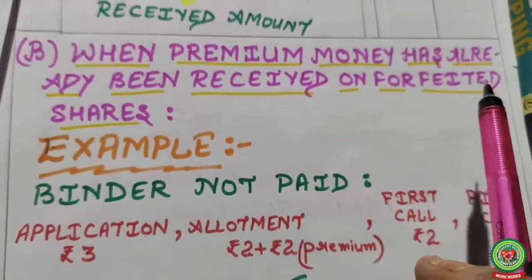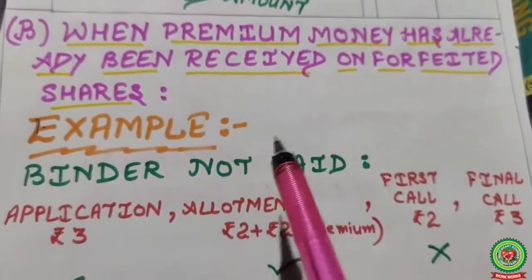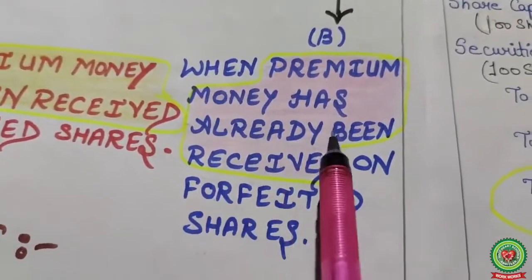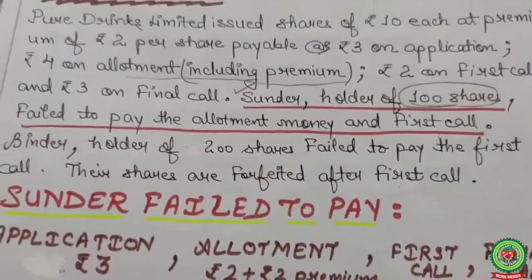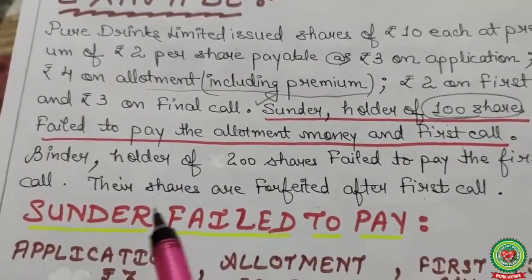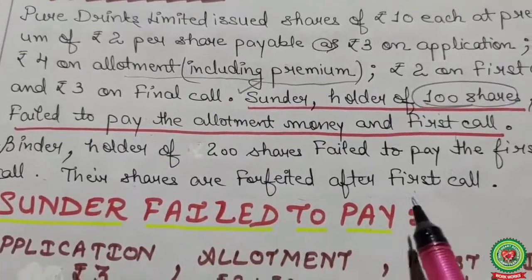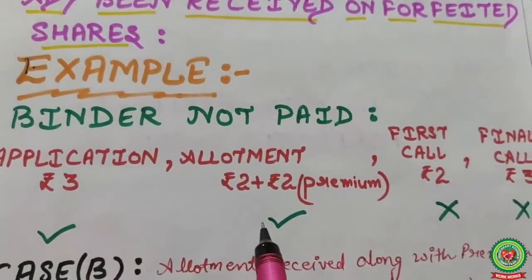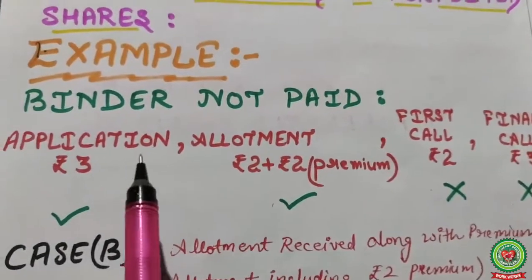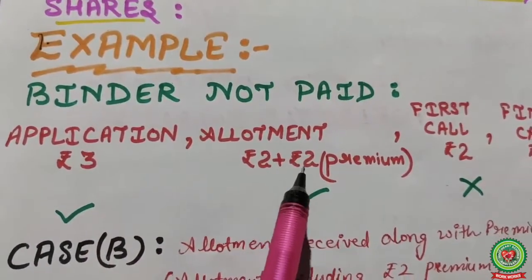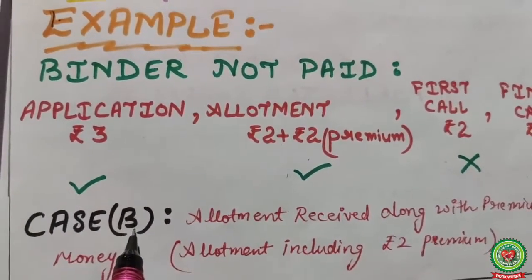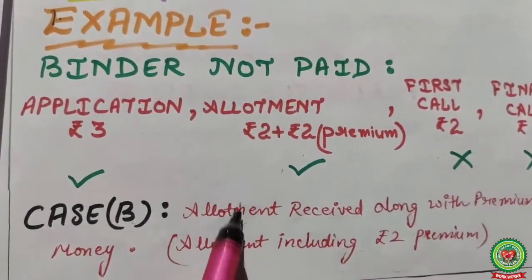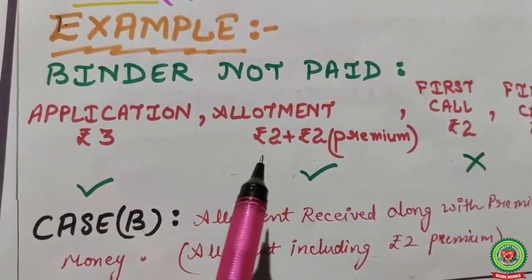Case B: when premium money has already been received on forfeited shares. Continuing the example — another shareholder, Binder, holder of 200 shares, failed to pay the first call only, and shares were forfeited after first call. Binder paid application money and allotment money (which includes premium), but did not pay the first call. Since allotment was paid, premium was also paid — so this is Case B, and there is no need to debit the Security Premium Account.